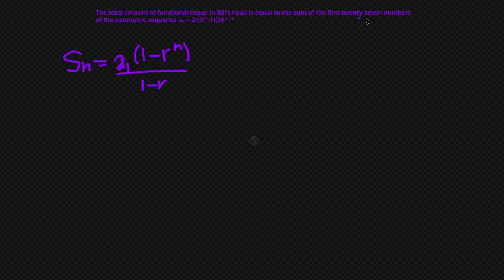So we already know what n is. It's going to be 27 because we want the first 27 numbers. But what's a1, and what is r? Well, the generic equation for a geometric sequence is the nth term is equal to the first term times r to the n minus 1. And if we take a look at the equation that we are given here, we can see that this winds up to this equation because we have an, and then we have this number, and then 3 to the n minus 1. So 3 must be our r, and our first term must be 2 divided by 3 to the 27th minus 1.